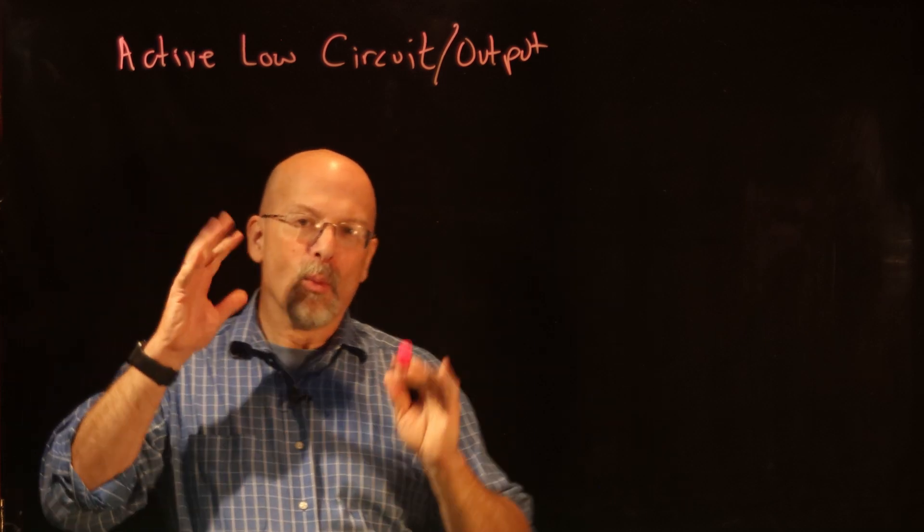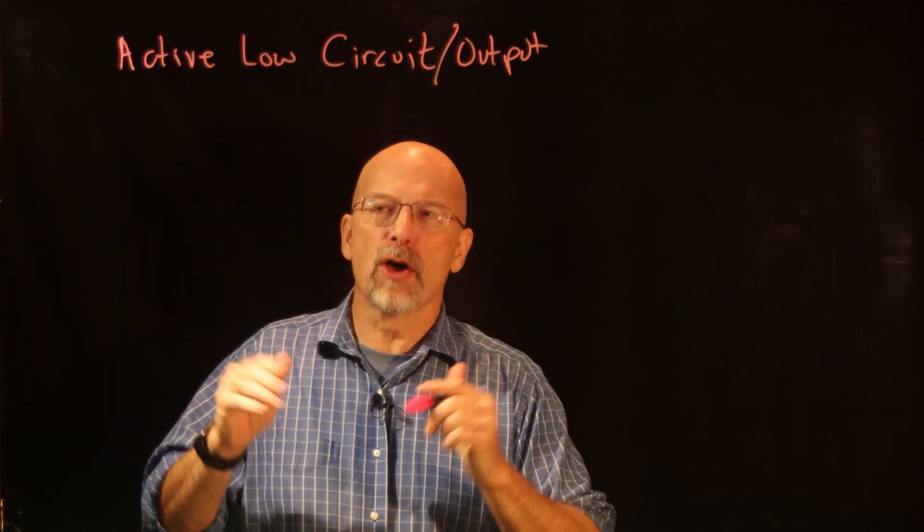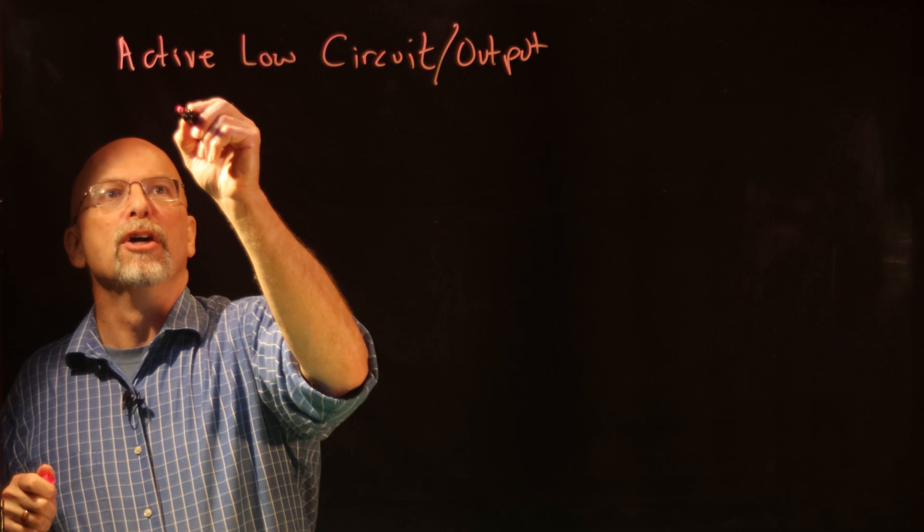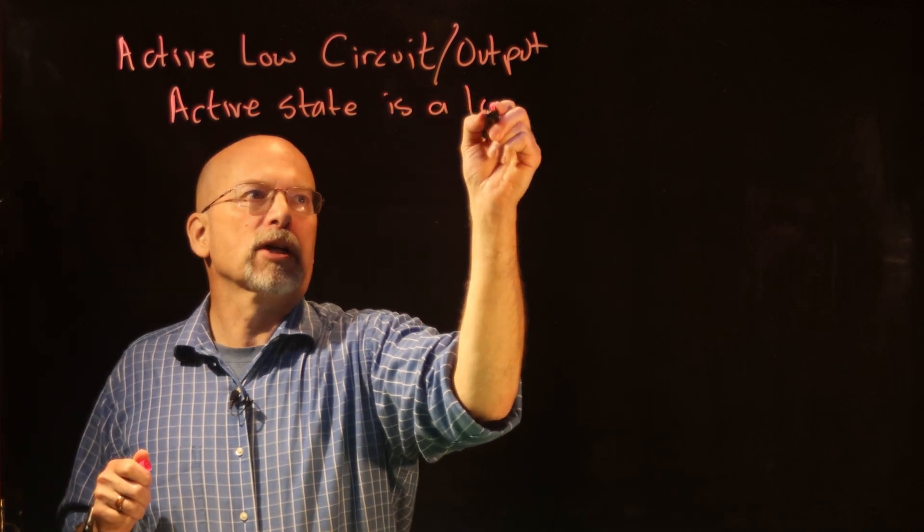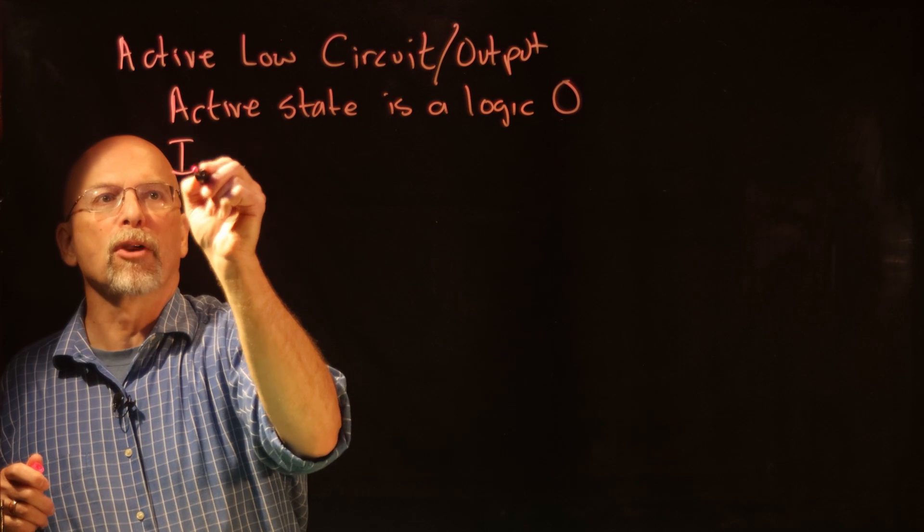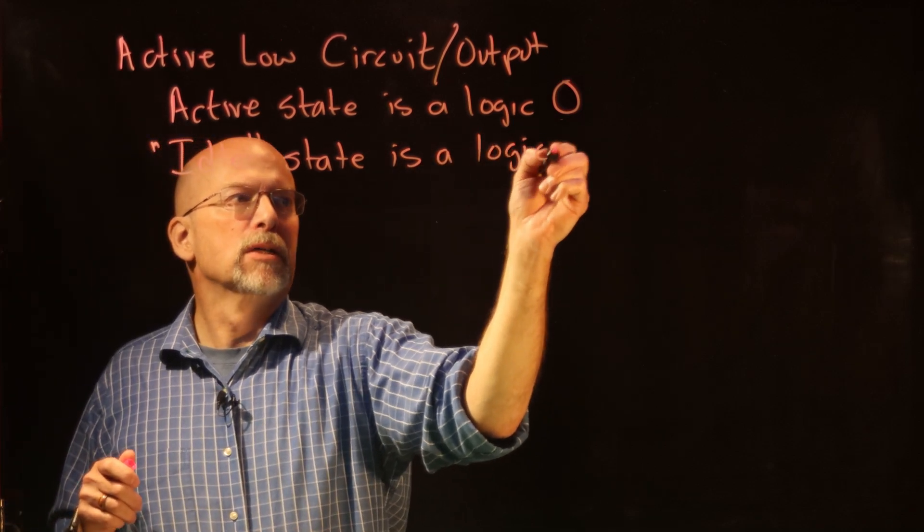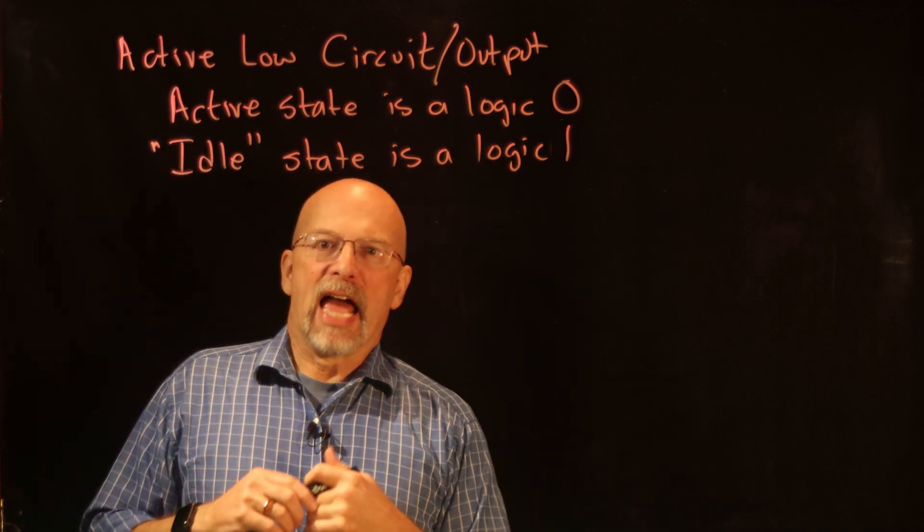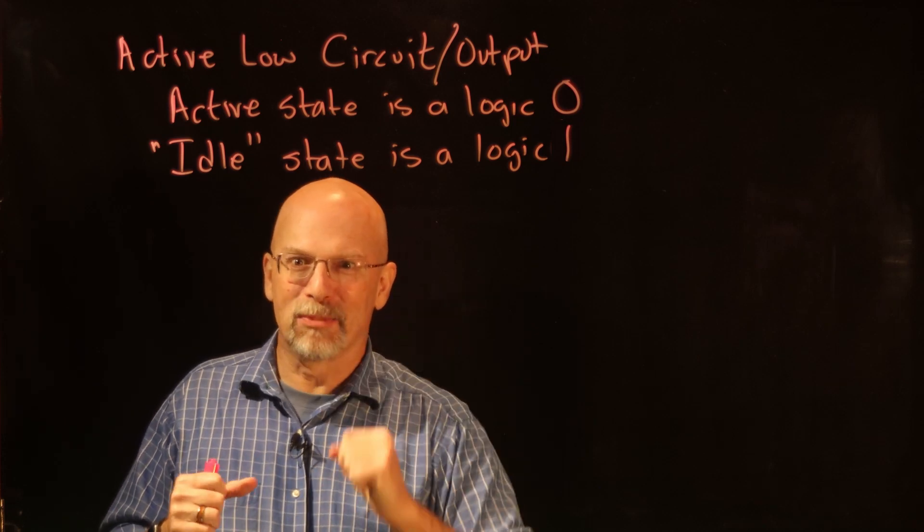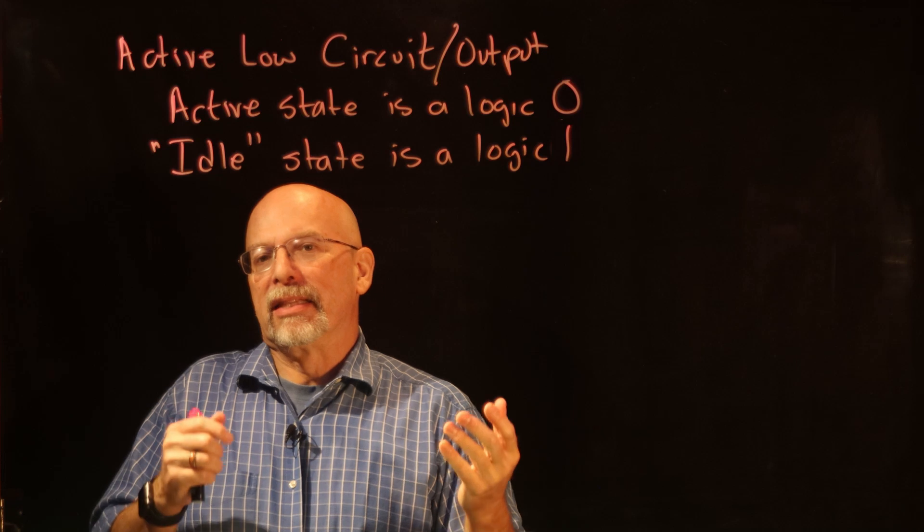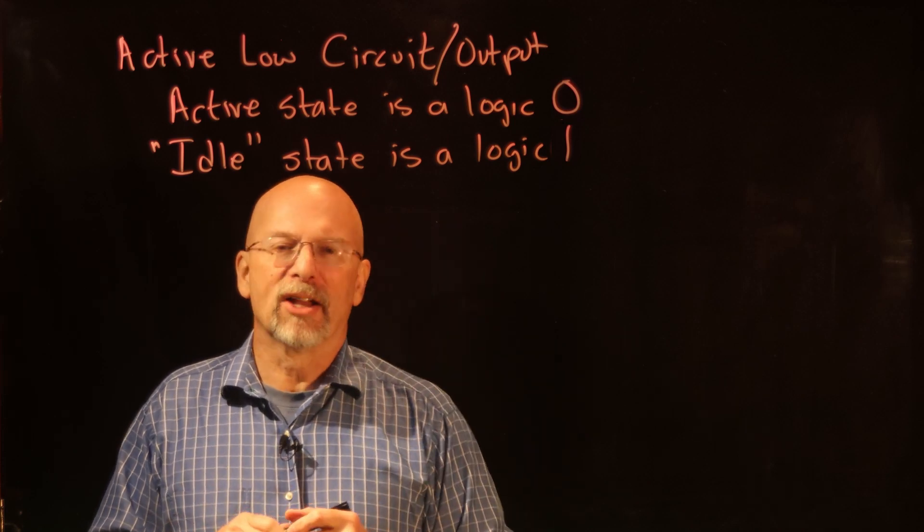Now, an active low output—what that means is that the active nature, the yes, the power, the one that's going to flow the quickest is going to be a logic zero. So this means that the active state is a logic zero and the inactive, or I'm going to refer to this as the idle state, is a logic one. So we've got this idea of active and inactive. And in fact, when you think about logic ones and logic zeros, typically you think of a one as being active, true, yes, right? And the zero being the inactive or the false. And that's not always the case.